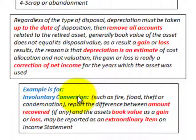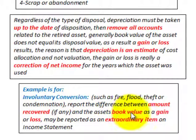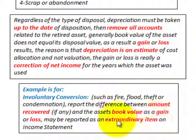An involuntary conversion can be caused by a fire, flood, theft, or condemnation of property. You report the difference between the amount recovered, if any, and the asset's book value as a gain or loss. It may be reported as an extraordinary item on the income statement.